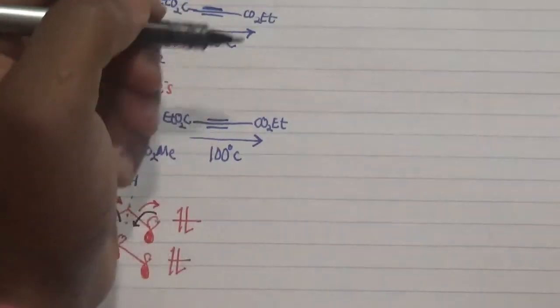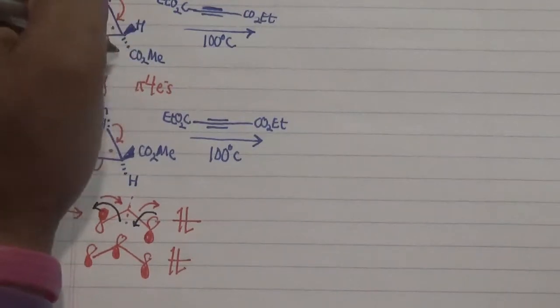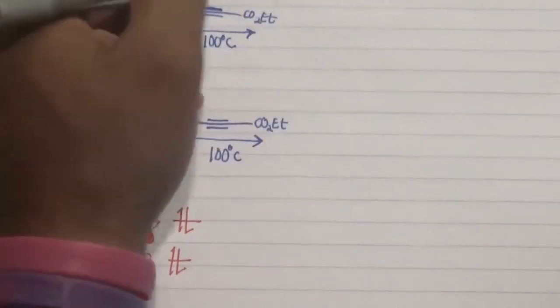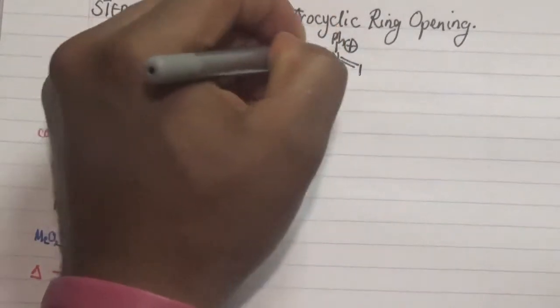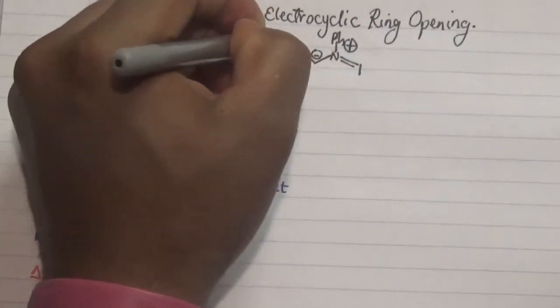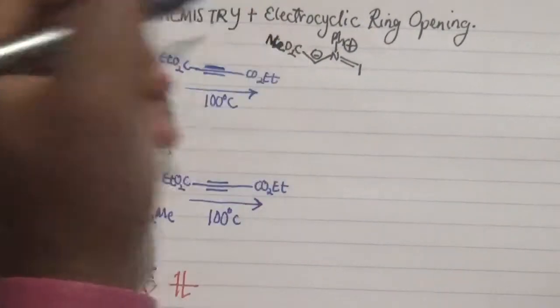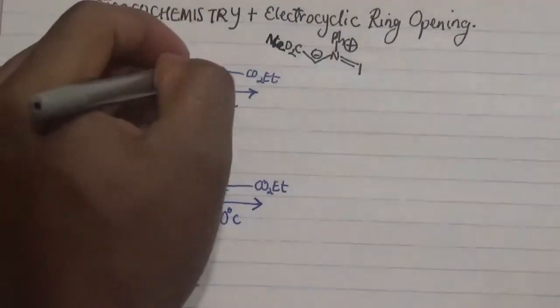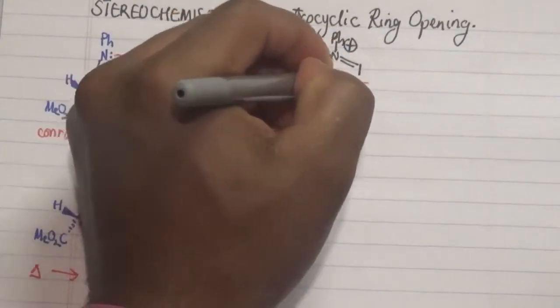At 100 degrees Celsius, take note of the positioning of our electron-withdrawing groups. In this first case, we have a nitrogen attached to the phenyl group — note that this nitrogen is positively charged — and we have this attached to the carbon, while this is attached to the negatively charged carbon, which is attached to our methyl group over there.